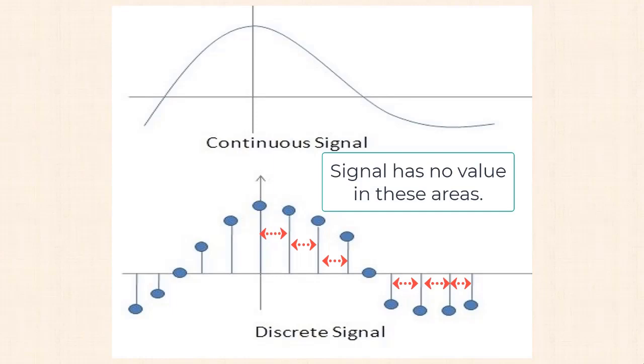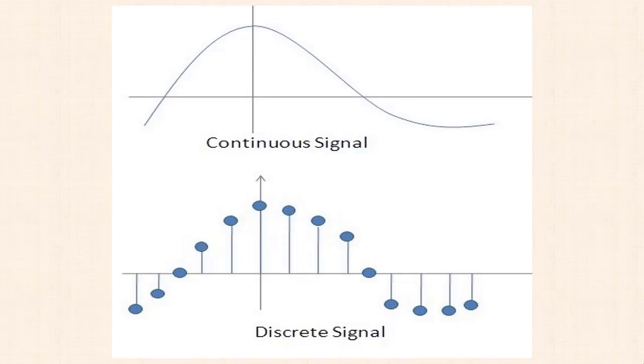An analog signal is one whose amplitude can take on any value in a continuous range. This is like the signal near the top. A digital signal's amplitude can only take on a finite number of values. We'll see one of those in a second. Okay, so all that may sound confusing. Let's clear this up.